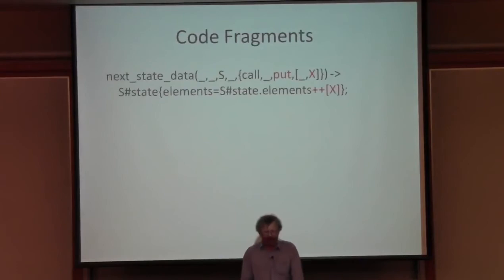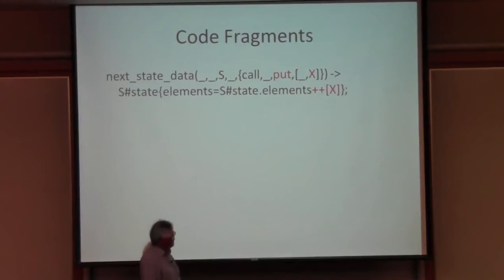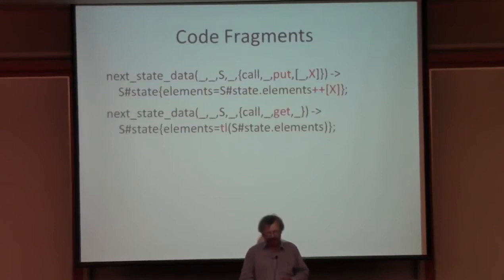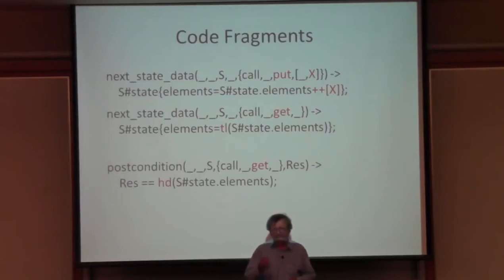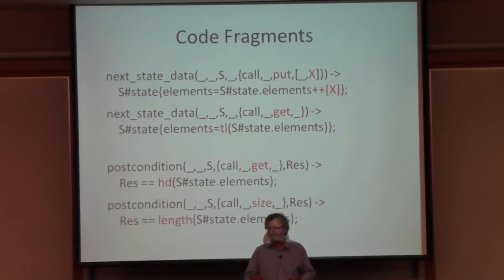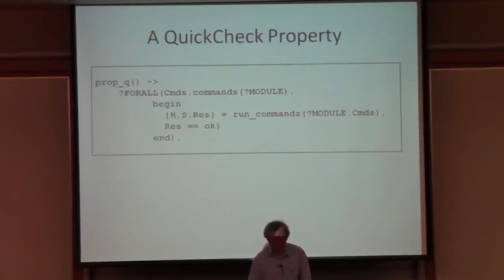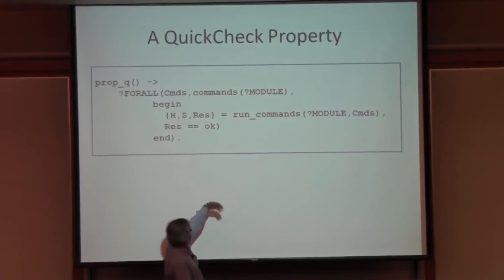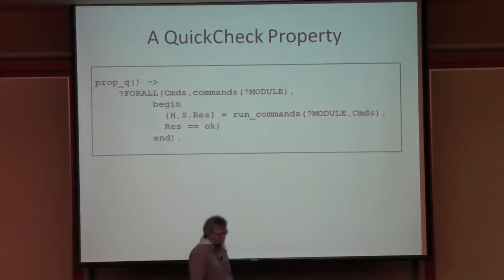Here are some code fragments: we write state transition functions in Erlang using pattern matching on the call type. When we do a put of value x, the effect on the model is to append x to the list of elements in the queue. When we do a get, the effect is to take the tail of that list. The post-conditions say: for get, the actual result must be the head of the list; for size, the actual result must be the length of the list. The property we test says: for all command sequences generated by these functions, when we run the commands, the result is OK - meaning all post-conditions held.